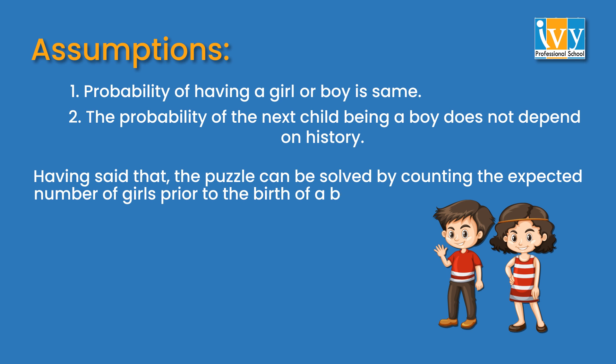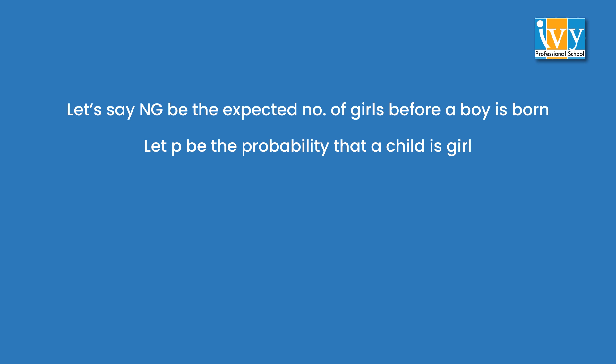Let's say that NG is the expected number of girls before a boy is born and p the probability that a girl child is born. In that case, 1 minus p is the probability that the child that is born is a boy.